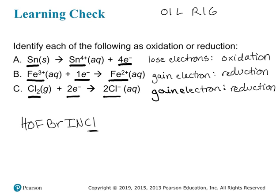On a test, this is more the format I would use — I'd give you one of these half reactions and you would have to determine whether the metal is losing or gaining electrons, and then identify that as oxidation or reduction.